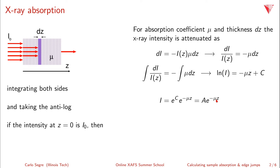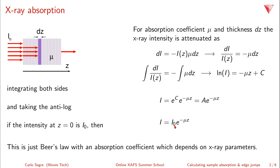If you have an intensity known at z equals zero — i zero — then the boundary condition sets A equal to i zero. So when z is zero, your intensity is i zero, as you expect. This is just Beer's Law with an absorption coefficient mu that depends on x-ray parameters. So we're interested in calculating mu and z.